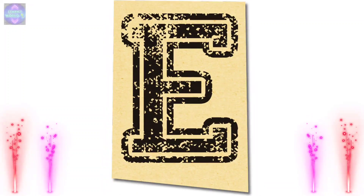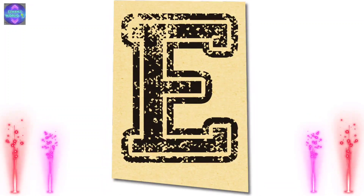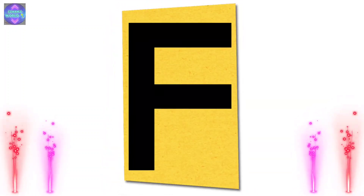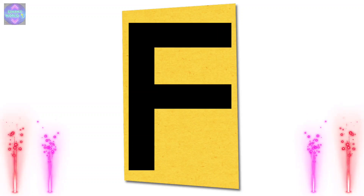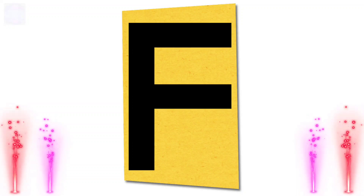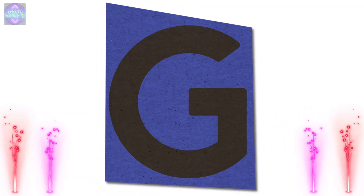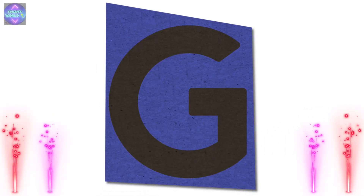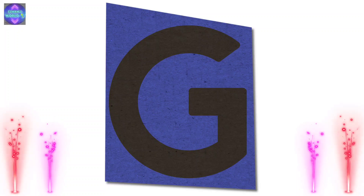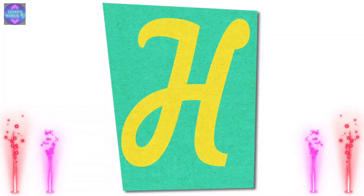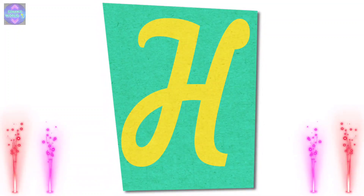E. E for elephant. F. F for fish. G. G for grapes. H. H for head.